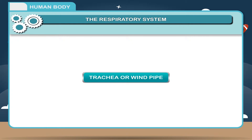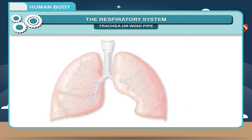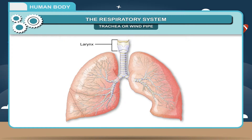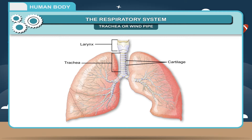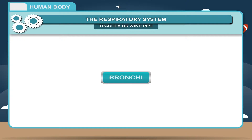Trachea or windpipe. The air from the larynx passes into a tube-like structure called the trachea. It is supported by rings of cartilage. It is divided into two tubes at the base, forming the left and right bronchi.